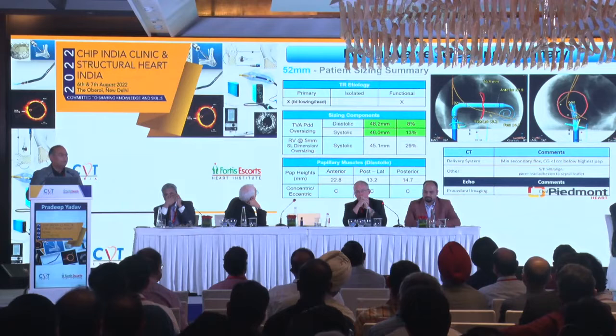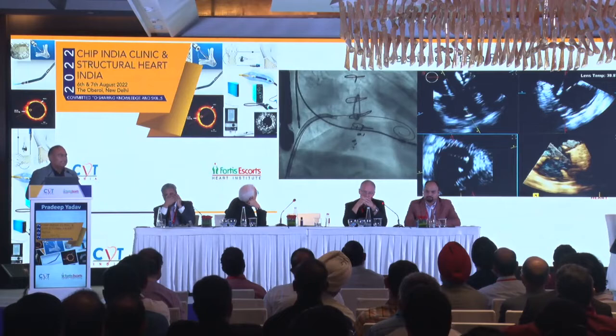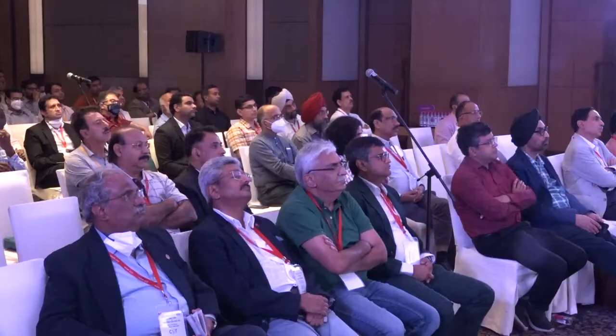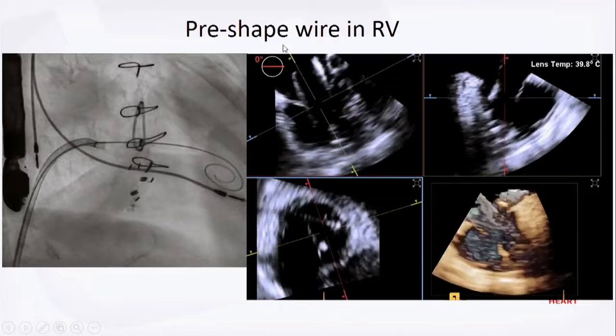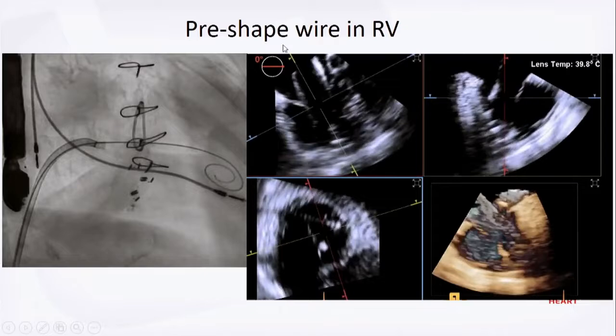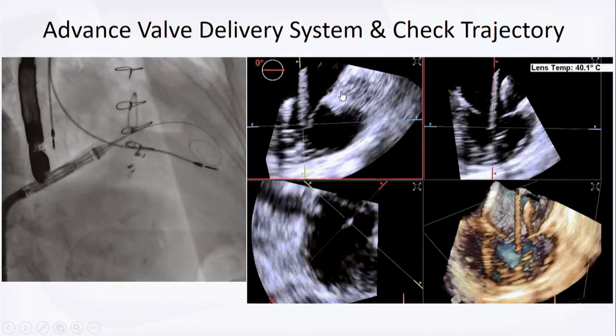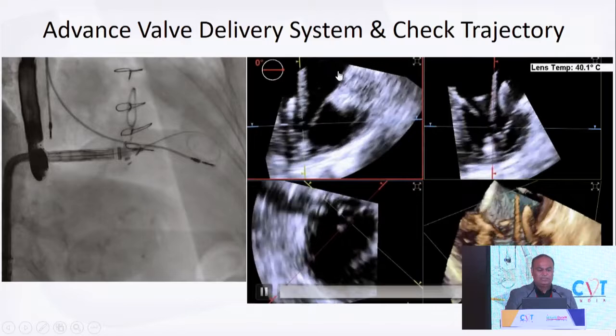Intra-procedural images show the mitral annuloplasty ring, TriLine pledgets, pacemaker lead, and the steerable Agilis sheath through which a Safari wire is advanced to the RV apex. On echo you see the pacemaker lead posteriorly and the Safari wire at the RV apex. Once the Safari is placed at the RV apex, advance the flexion catheter — gently flex and advance while keeping the wire in position.